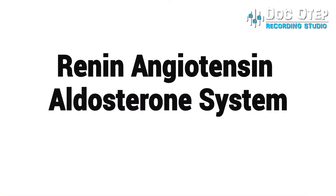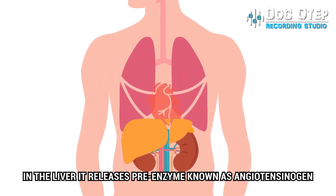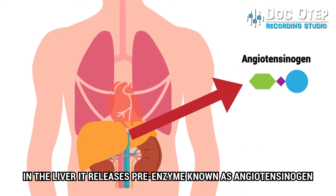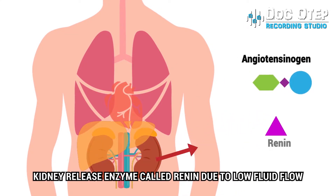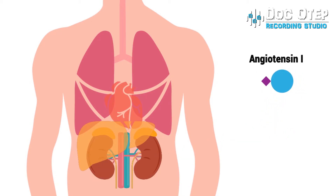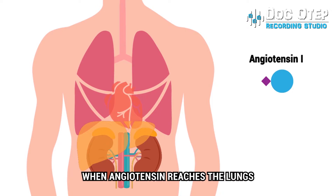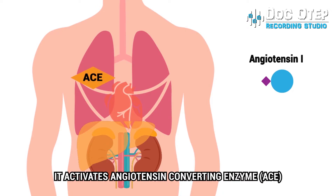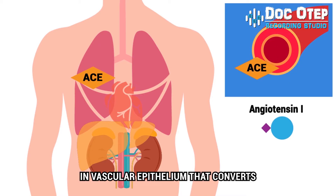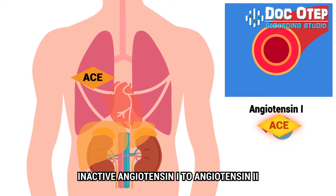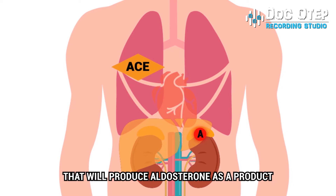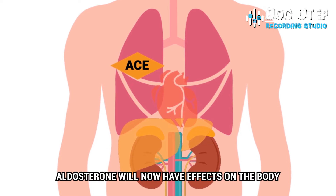The renin-angiotensin-aldosterone system: In the liver, a pre-enzyme known as angiotensinogen is released. The kidneys release an enzyme called renin due to low fluid flow, which converts angiotensinogen to angiotensin-1. When angiotensin-1 reaches the lungs, it activates angiotensin-converting enzyme found in pulmonary secretion and also produced in vascular epithelium, converting inactive angiotensin-1 to angiotensin-2. Angiotensin-2 then acts on the adrenal gland, which produces aldosterone, and aldosterone then exerts its effects on the body.